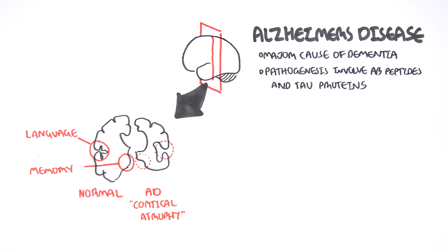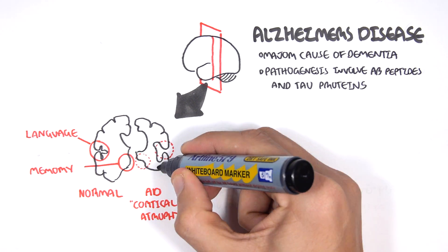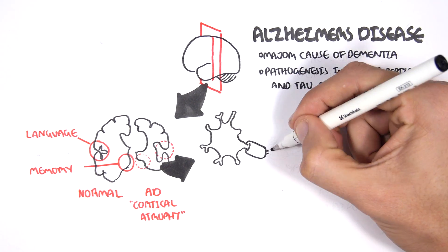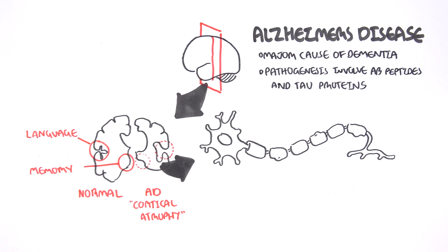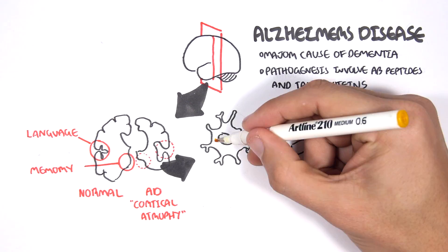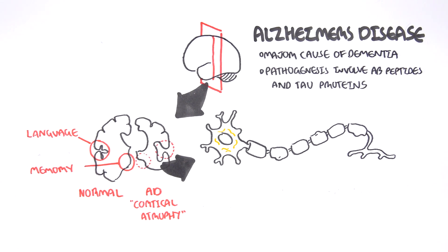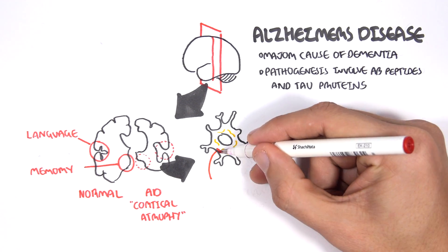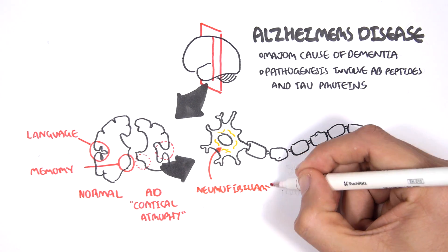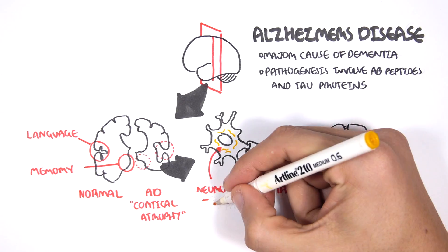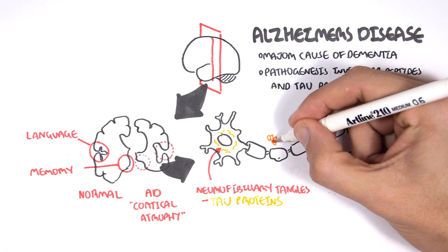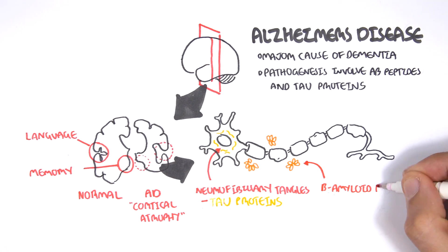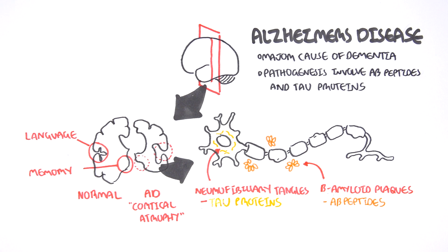Zooming in to look at the pathology of the Alzheimer's brain in more detail, we can see things within the soma of the neuron. These yellow structures are neurofibrillary tangles, which are made up of microtubules — the tau proteins. Also, outside of the neuron we can see the accumulation of peptides known as amyloid plaques, which are made from amyloid beta peptides. These are essentially the hallmarks of Alzheimer's disease: the neurofibrillary tangles and the amyloid plaques.